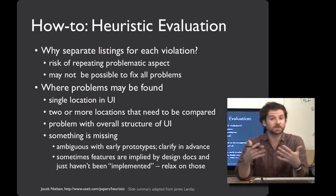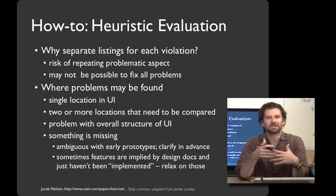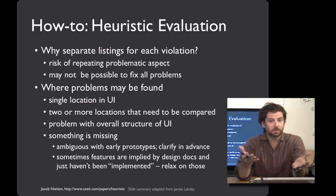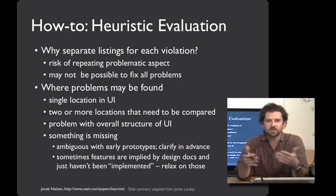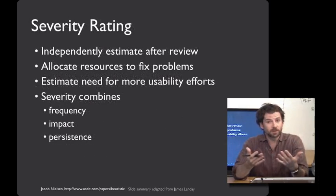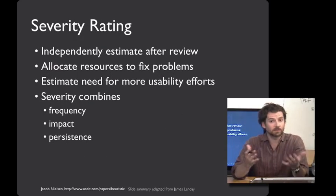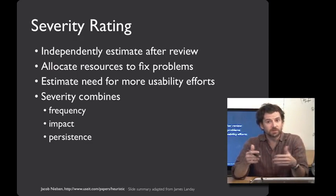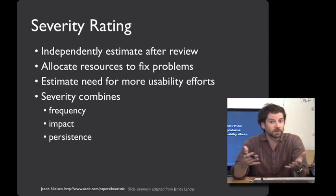These problems can be very detailed — like the name of something being confusing — or they can have to do more with the flow of the user interface or the architecture of the user experience, not specifically tied to an interface element. Your evaluators may also find that something's missing that ought to be there, and this can be sometimes ambiguous with early prototypes like paper prototypes. You'll want to clarify whether the user interface is believed to be complete or whether there are intentionally elements missing ahead of time. After evaluators go through the interface, they can independently assign a severity rating to enable you to allocate resources to fix problems.